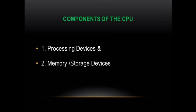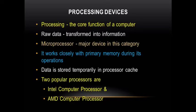The components of the CPU are grouped into two: first, processing devices, and second, memory or storage devices. Processing is the core function of a computer. It is the stage where raw data is transformed into information. Components that manipulate data into information are categorized under processing. The microprocessor is the major device in this category. It works closely with primary memory during its operations, and data is stored temporarily in processor cache and primary memory during the processing period.